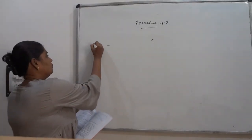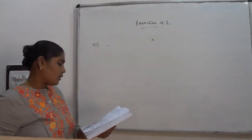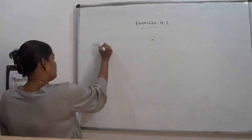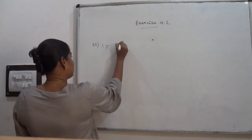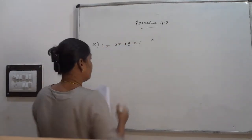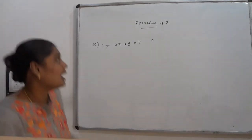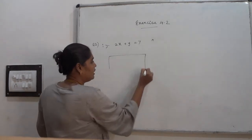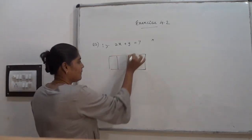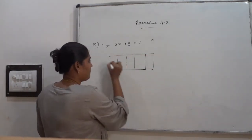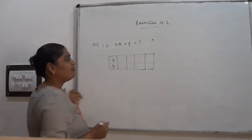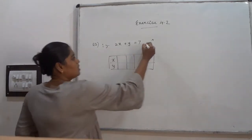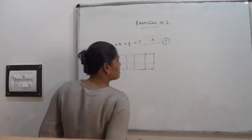Question number 2: Write 4 solutions for each of the following equations. The first one is 2x + y = 7. For this linear equation I have to find out 4 solutions by varying x and y. I am marking this as equation number 1.